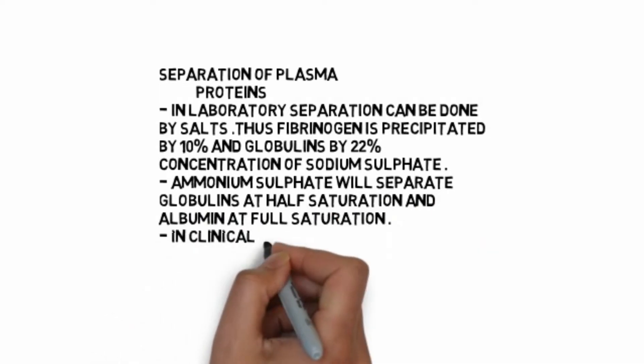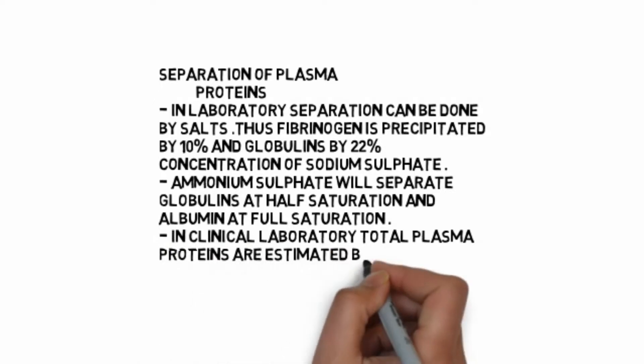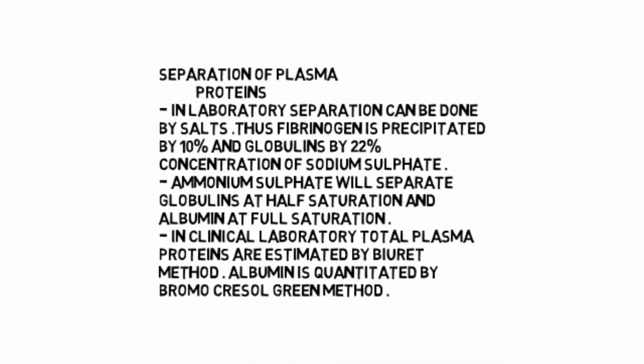In clinical laboratory, total plasma proteins are estimated by biuret method. Albumin is also quantitated by bromocresol green method.